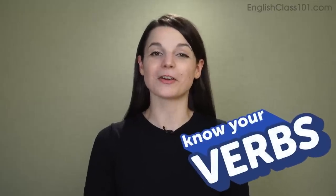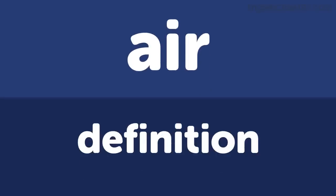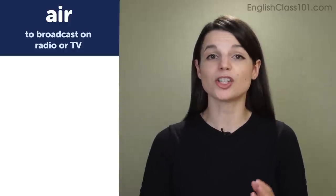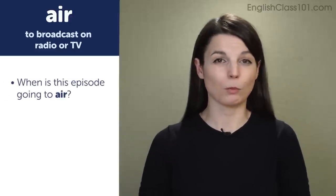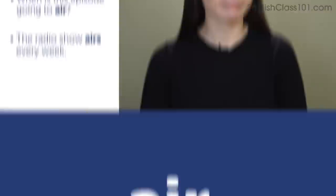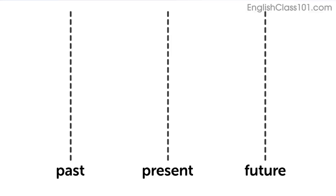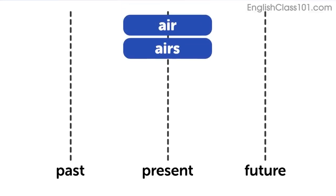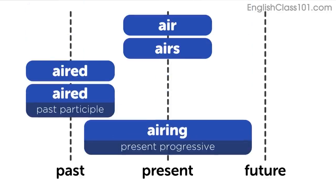Hi, everybody. Welcome back to Know Your Verbs. My name is Alicia, and in this episode we're going to talk about the verb 'air.' The basic definition is to broadcast on radio or TV. Examples: 'When is this episode going to air?' 'This radio show airs every week.' Conjugations: present — air, airs; past — aired; past participle — aired; progressive — airing.